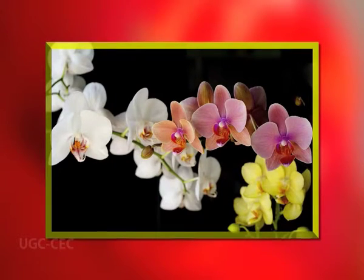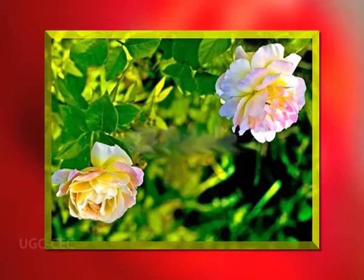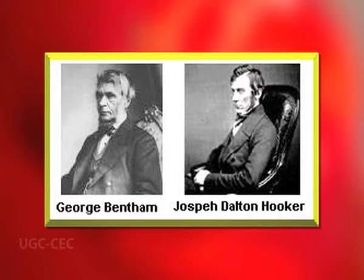They treated apetalous and catkin-bearing dicotyledons as primitive relative to flowers which bear petals, and simple unisexual flowers as primitive. These views are, however, not acceptable to most recent phylogeneticists. The unification of polypetaly and apetaly, recognized as separate by Bentham and Hooker, was certainly a forward step.